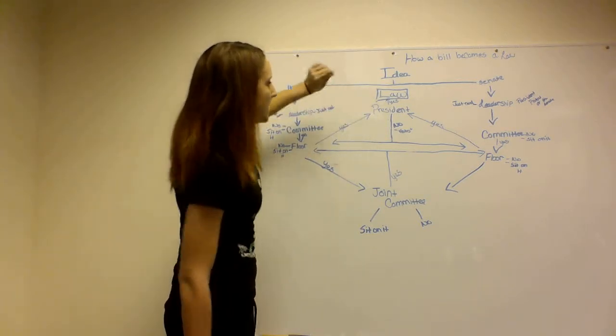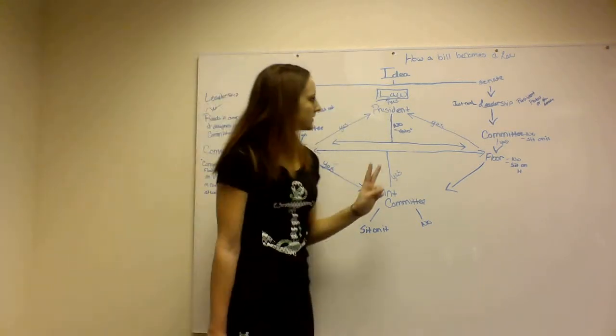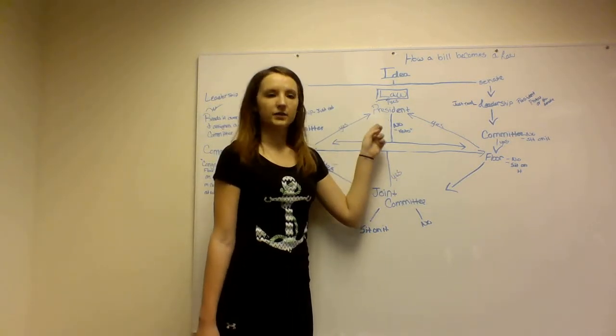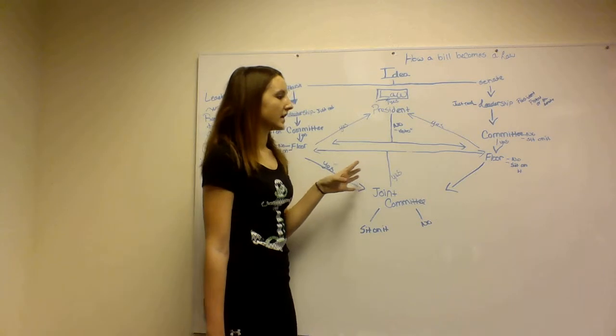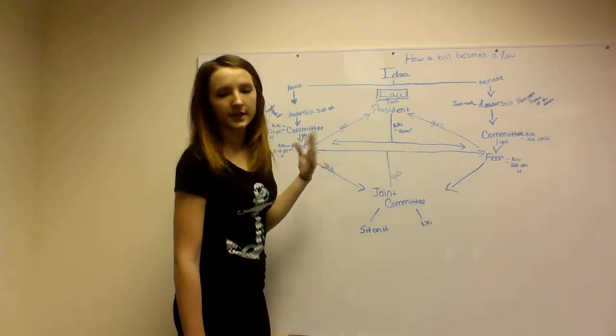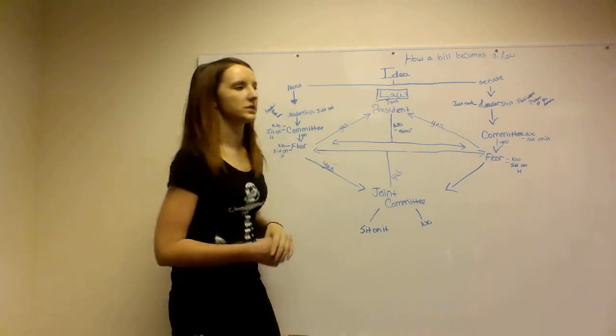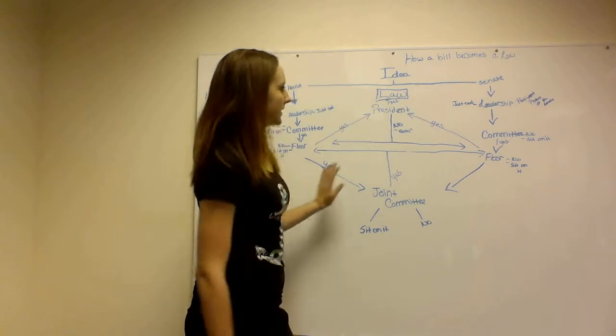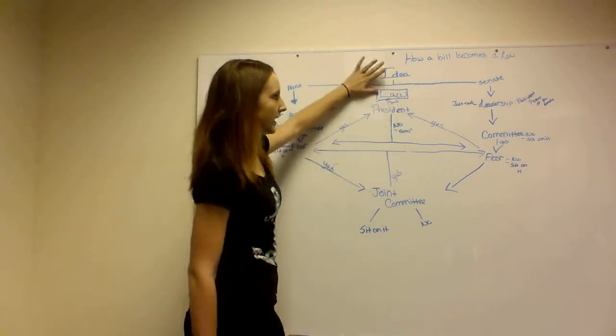And the President has two options, really. He can say no, or veto it, and it'll go back down to the floor to try and get the majority of the votes, try to get it passed anyway. Or, the only thing he can do is say yes and it'll become a law.